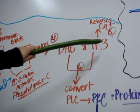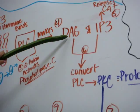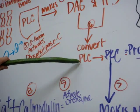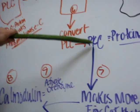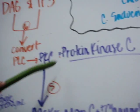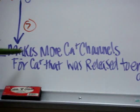Now, IP3 causes the release of calcium. Together, DAG and IP3 work together and convert PLC into PKC. PKC is protein kinase C. PKC makes more calcium channels for calcium that has been released to enter the cell.